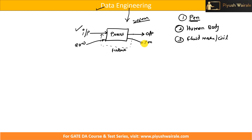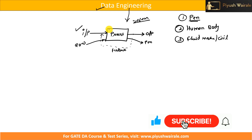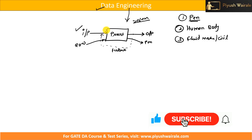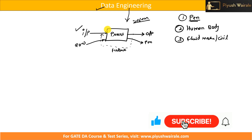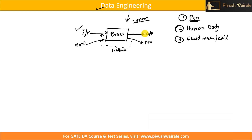So this is what engineering is — we have an input, we have a process, we have an output. Input can be from multiple sources and of multiple types. The process can be of multiple types and multiple processes can run in parallel or in series. Similarly, in the output we can get one type of output, different types of output, or output in different forms.